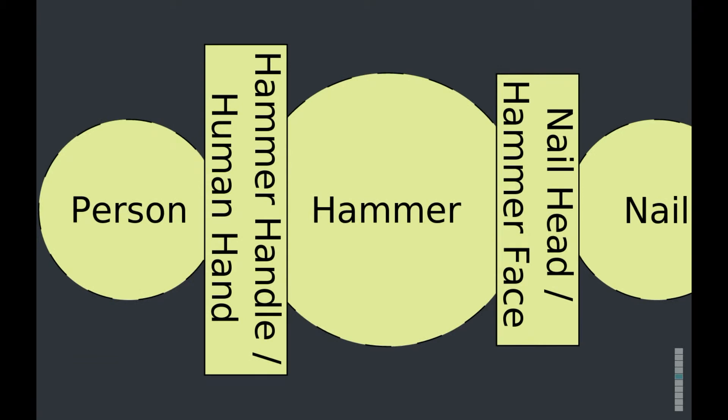What systems do you think a hammer might interact with? A person and a nail. Hammer, handle, human hand. So, there's an interface between a person and a hammer. It's a physical interface. It's where a person's hand touches the hammer handle. And do you know anything that flows across that interface? Force, energy.